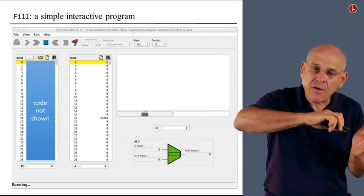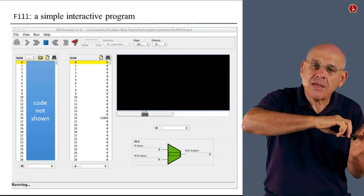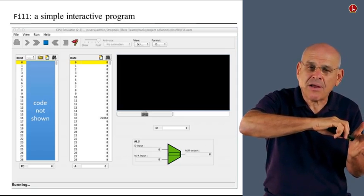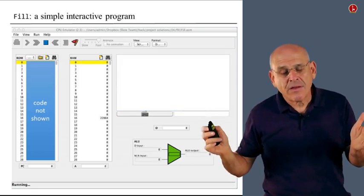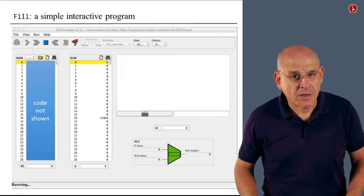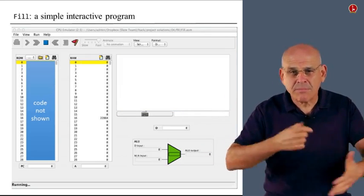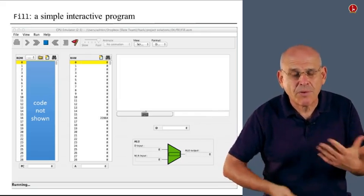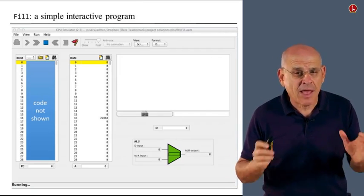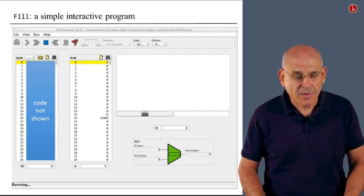And once you lift your finger from the keyboard, the screen becomes again clear. You put your finger again on any key on the keyboard, the screen becomes black. You take your finger away, the screen becomes clear. That's what this program is doing. It is going through some sort of an infinite loop that listens to the keyboard all the time and acts accordingly.